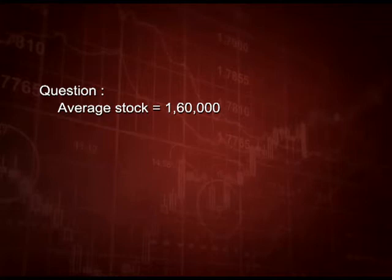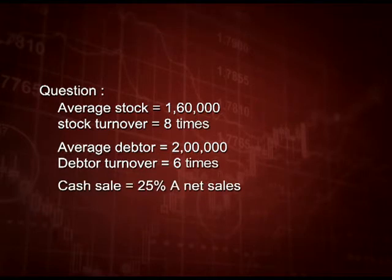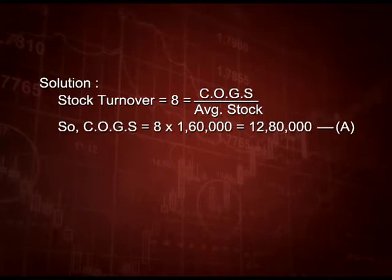Let us have a combination question on GP ratio, stock turnover, and debtor turnover. Average stock is 1,60,000, stock turnover is 8 times, average debtor is 2,00,000, debtor turnover is 6 times, cash sale is 25 percent of net sales, and we have to calculate GP ratio. Starting with stock turnover: 8 equals cost of goods sold upon average stock 1,60,000. Cross multiplying, cost of goods sold is 12,80,000 — take it as A.